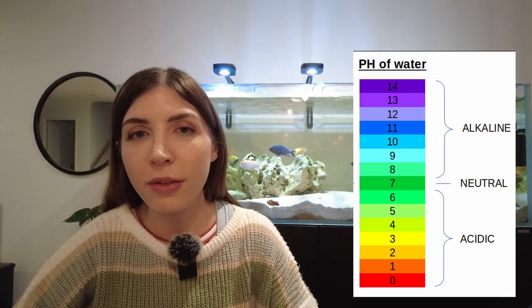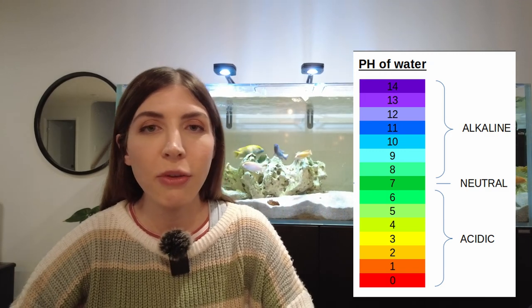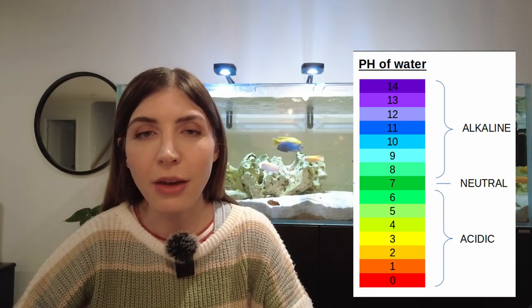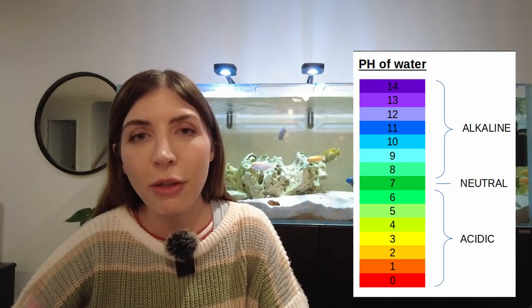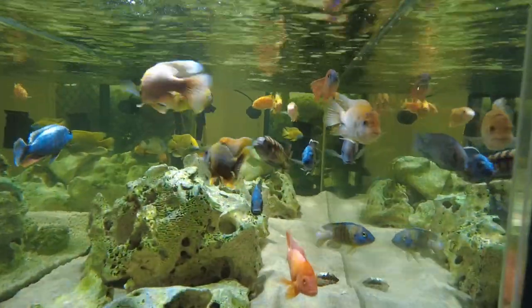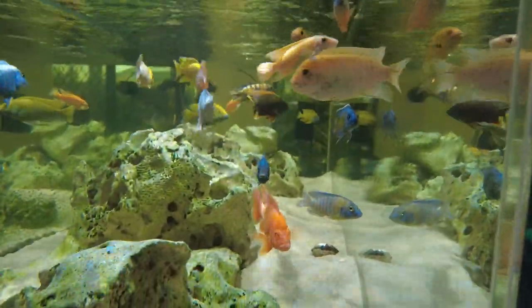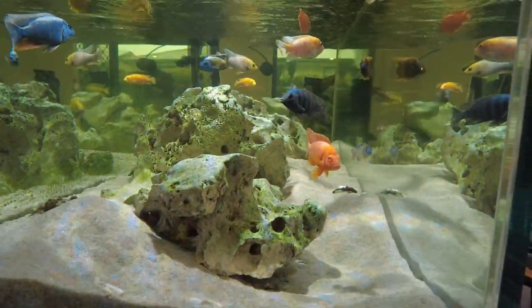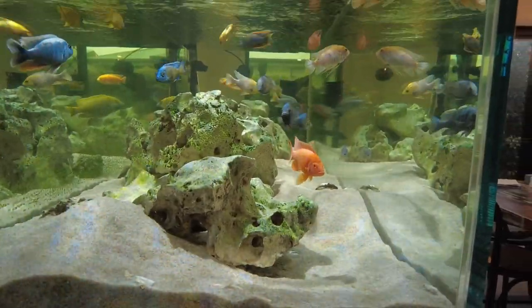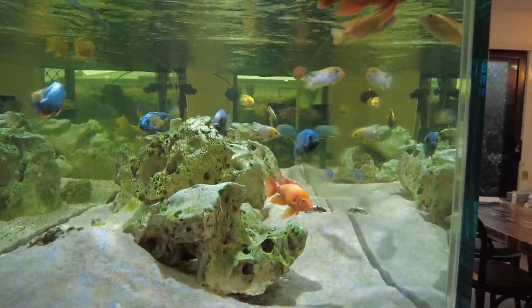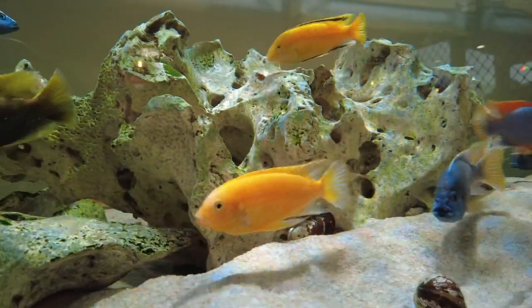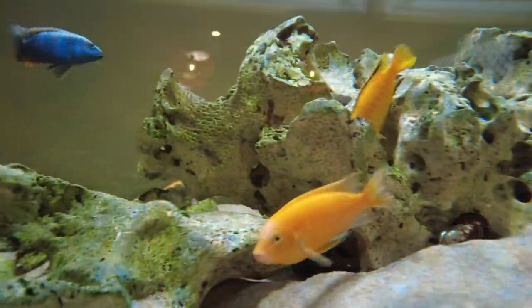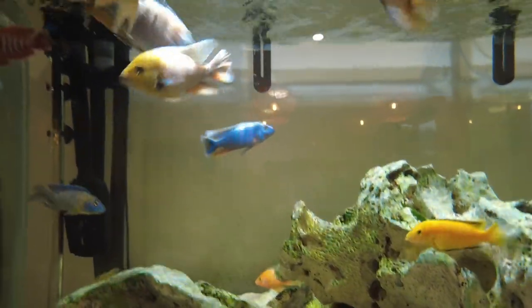pH ranges from 0 to 14. A pH of 7 is neutral, a pH above 7 is alkaline, and below 7 is acidic. Minerals in water from rocks make pH become more alkaline. What will make a pH become more acidic is having waste or decaying organic matter in the water, or having a high content of CO2 in the water. As nitrates build up in your tank, the pH will be more inclined to become lower and more acidic.